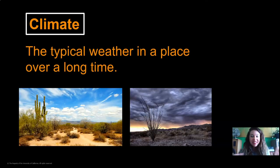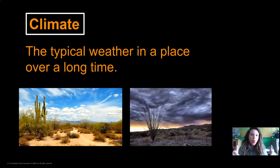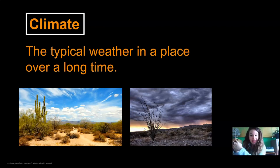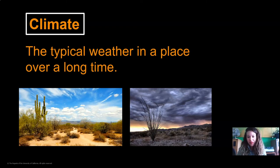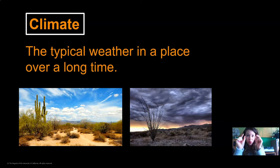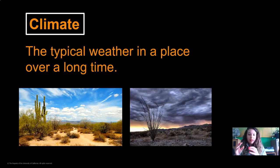When we notice that a pattern repeats itself over time in a place, we say that that is the climate. The climate is the typical weather in a place over a long time. Weather is what is happening in a place on one day. Climate is like the pattern of weather that we can expect over a long time. Here's an example: if you lived in a desert, you would expect the weather to be really dry — the climate of a desert is very, very dry. But that doesn't mean it never rains. You might have a day of weather where it's rainy, because weather talks about the conditions in a place on like one day. But the climate of the place over a long time — we would expect to see a lot of dry weather. So that's the typical weather.